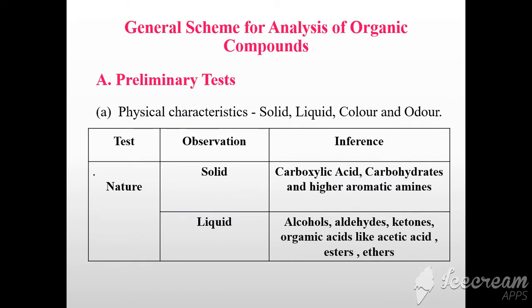We can see the general scheme for analysis of organic compounds. The first test is the preliminary test. Physical characteristics like solid, liquid, color, and odor are observed. Regarding nature: if the compound is solid, it is likely to be a carboxylic acid, carbohydrate, or higher aromatic amine. If the compound is liquid, it is likely to be an alcohol, aldehyde, ketone, organic acid like acetic acid, ester, or ether.